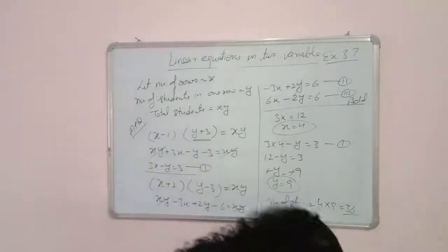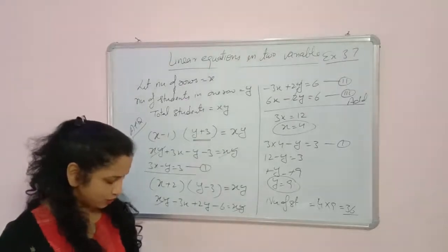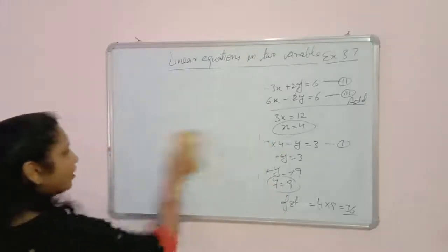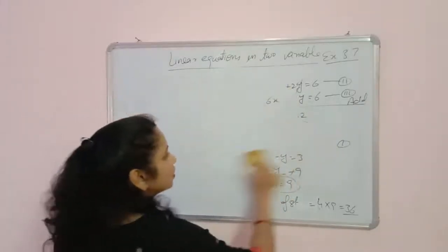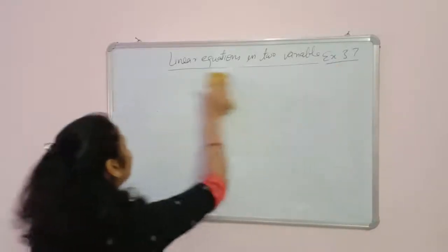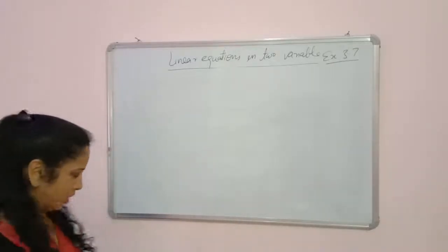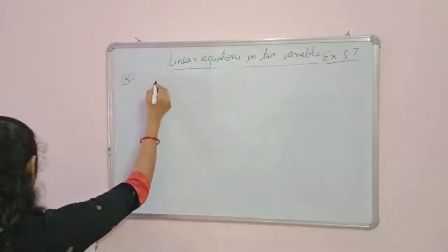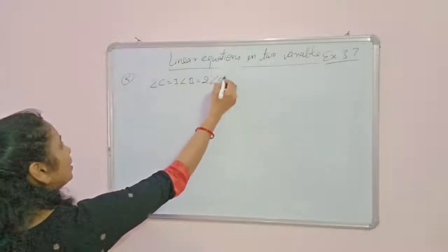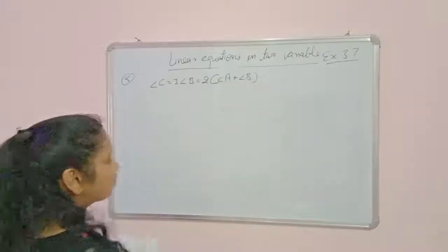We will do one more question — question 5 — and 3 questions will be left for you to try yourself. In case of any doubt, you have your Zoom classes. Question 5: angle C equals twice angle B equals twice angle A plus angle B, for the three angles of triangle ABC.